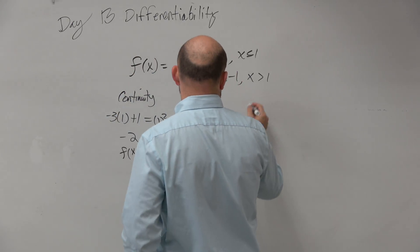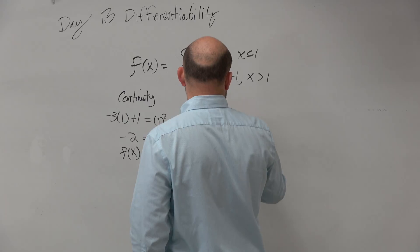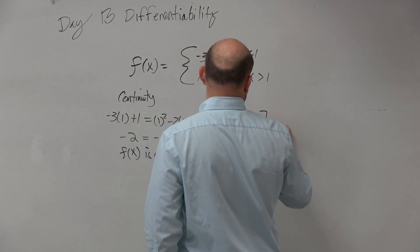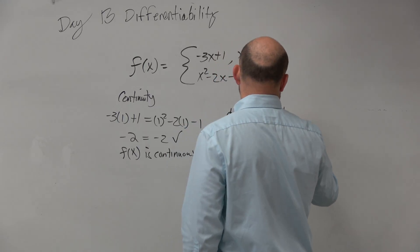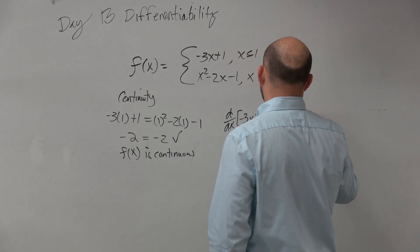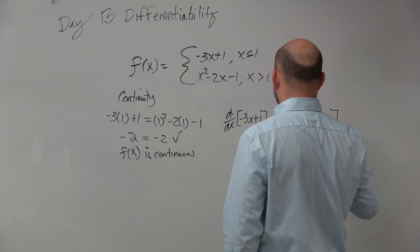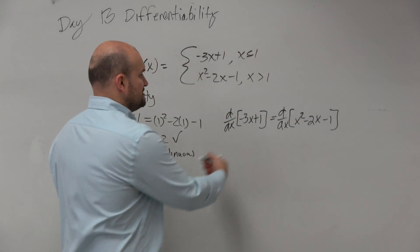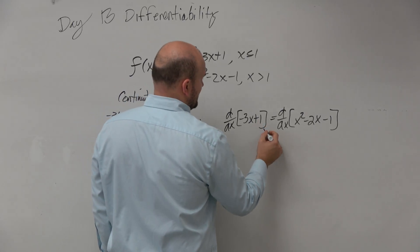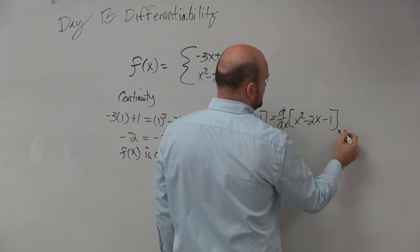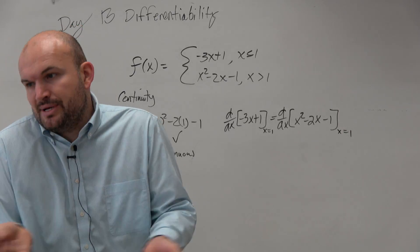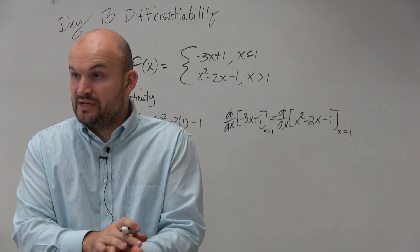So what we're going to do is take d/dx of negative 3x plus 1 equals d/dx of x squared minus 2x minus 1, at x equals 1. We want to find whether the derivative is the same at that point.